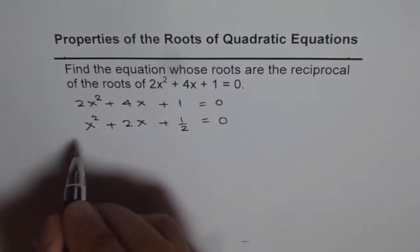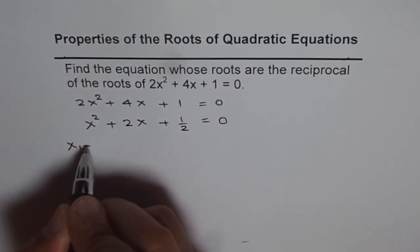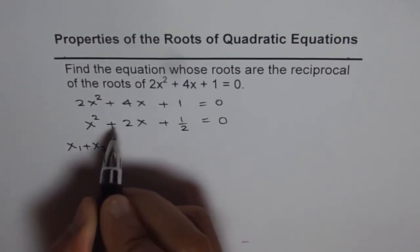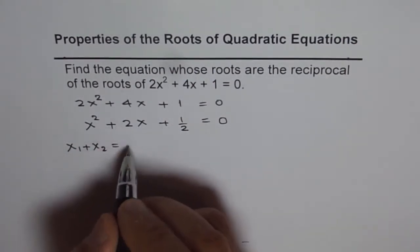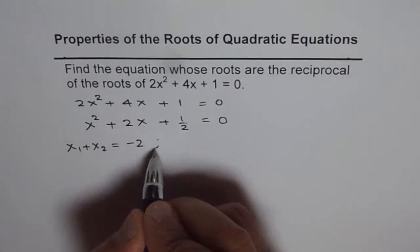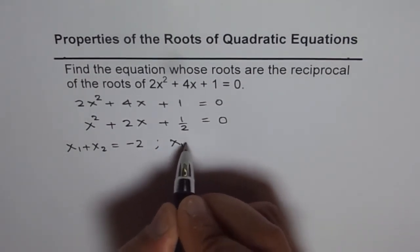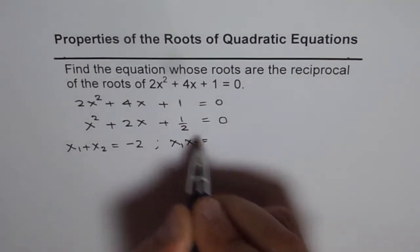Now the sum of the roots for this equation, that means x₁ + x₂, should be equal to negative of 2, which is -2. And the product, that is x₁ times x₂, should be equal to 1/2.